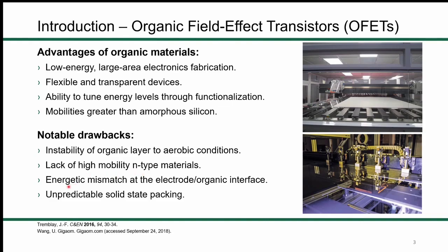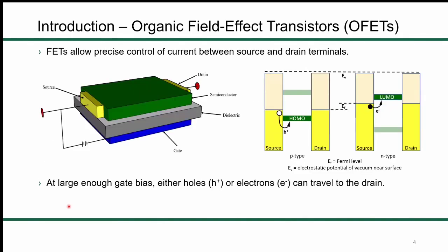There are several notable drawbacks to organic materials in electronic devices. One of the largest problems is instability of the organic layers to aerobic conditions, or general instability during device operation. There's also a lack of high-mobility n-type materials — there are many examples of n-type organic materials, but most have relatively low mobility and are more rare than their p-type counterparts. There are also issues with energetic mismatch at the electrode-organic interface.